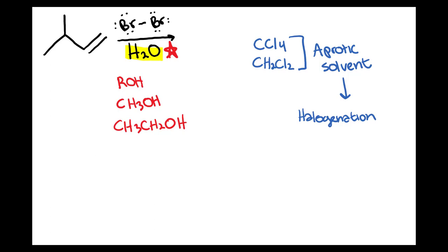As you can see, the solvent here is water and water is a protic solvent. It's important because for halohydrin formation you're always going to be using a protic solvent. That might be water or it could also be an alcohol such as methanol or ethanol.